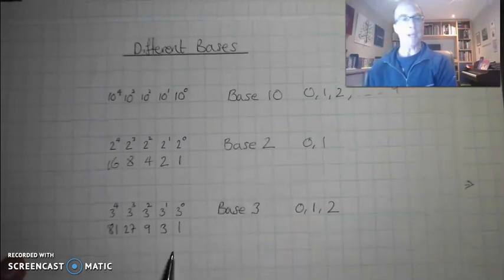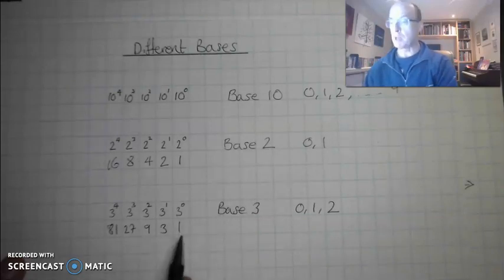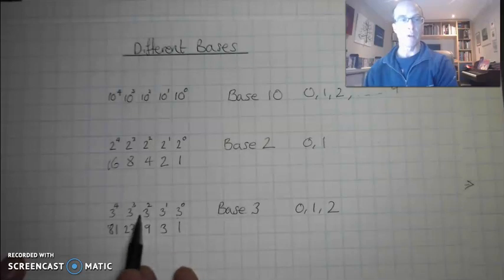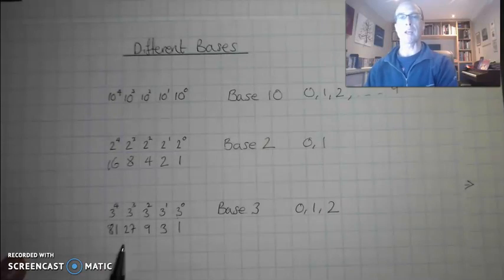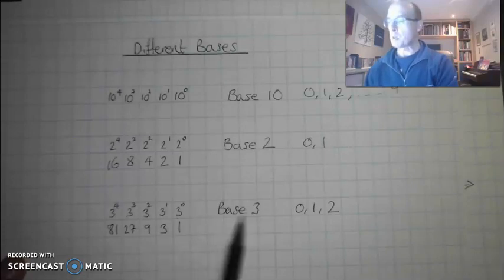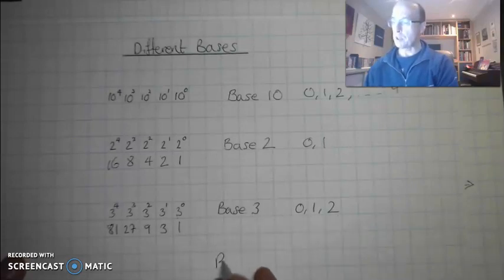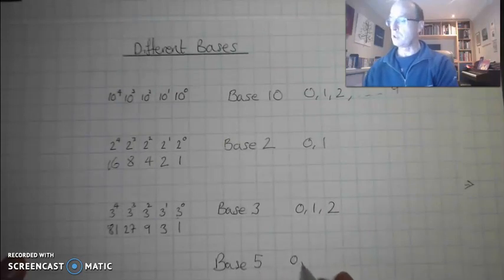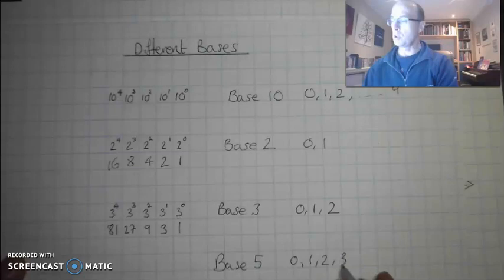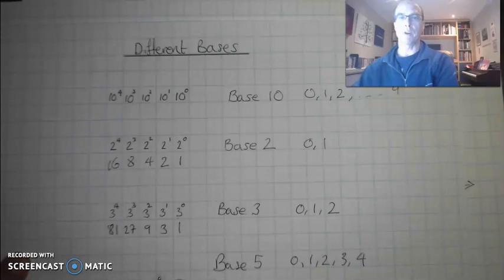Base 5 would work the same way. I would have 5 to the power of 0, 5 to the 1, 5 to the 2, 5 to the 3, 5 to the 4. I can work out the value of a digit in each of those positions. With base 5 I would have 5 digits: 0, 1, 2, 3, and 4 — stopping one short of the base.